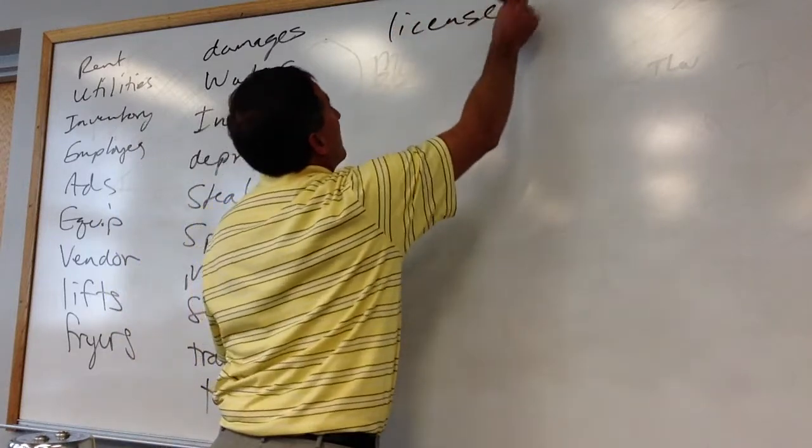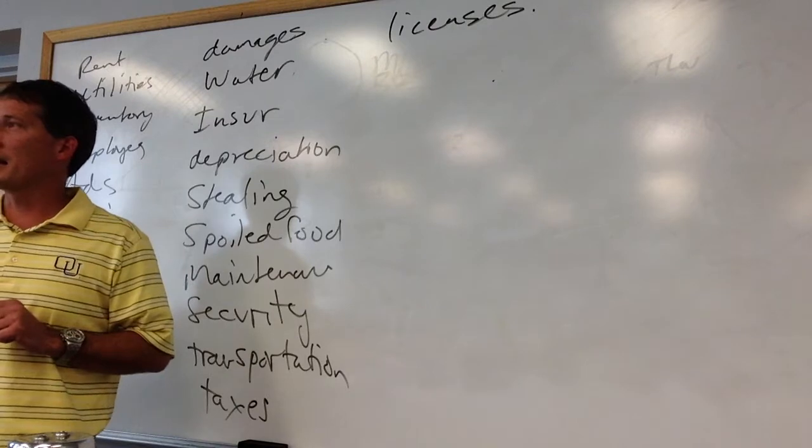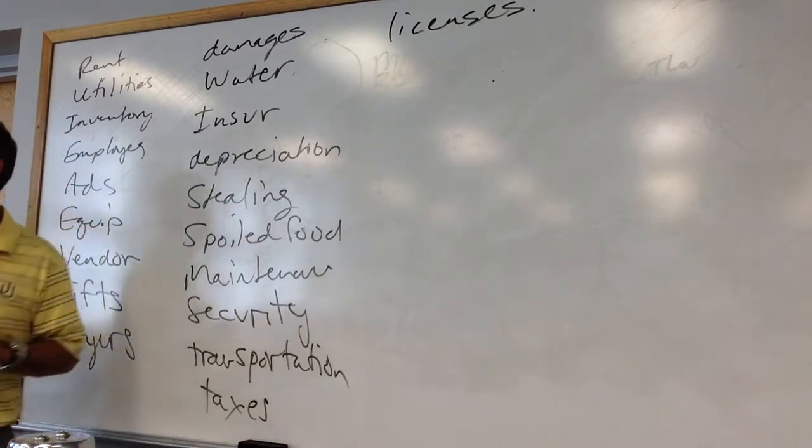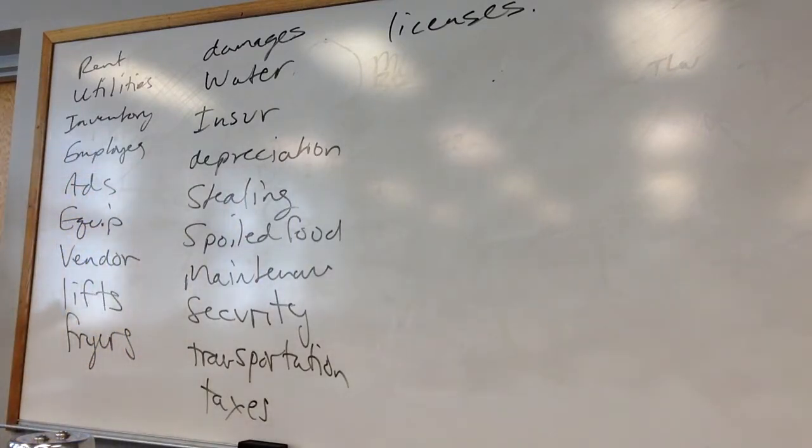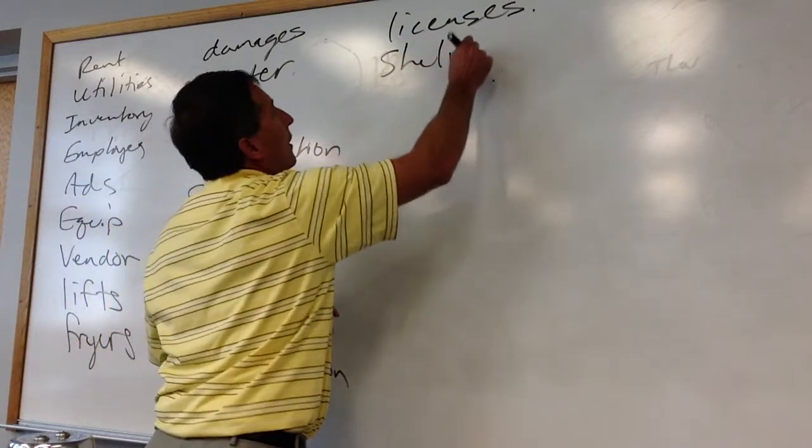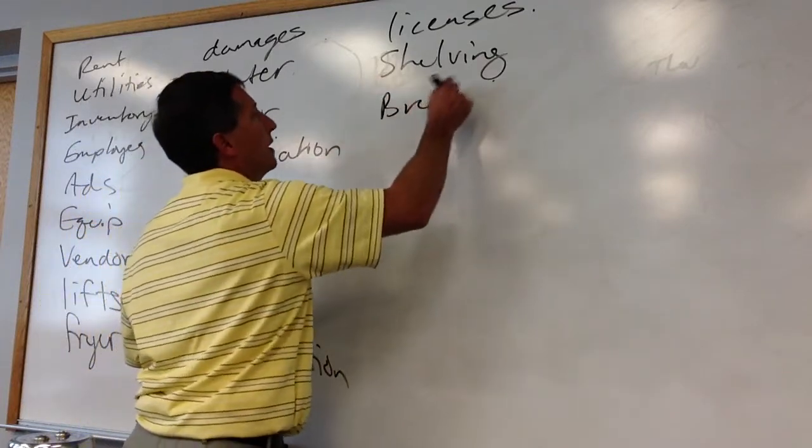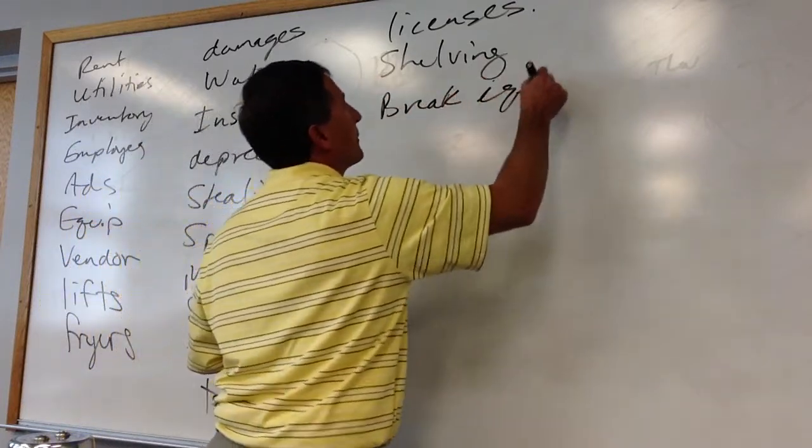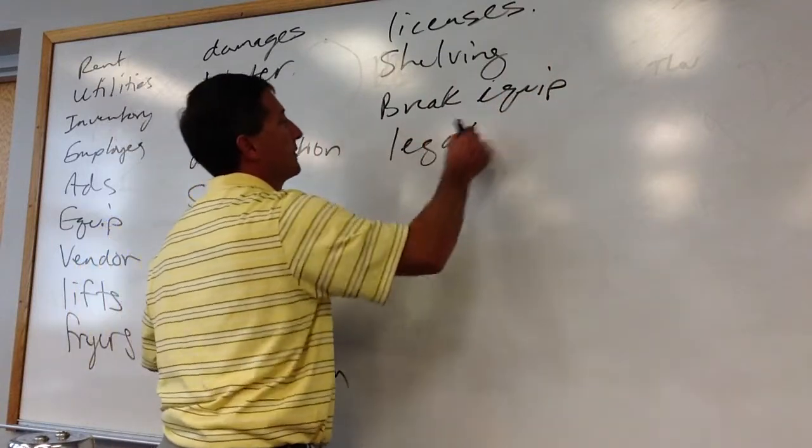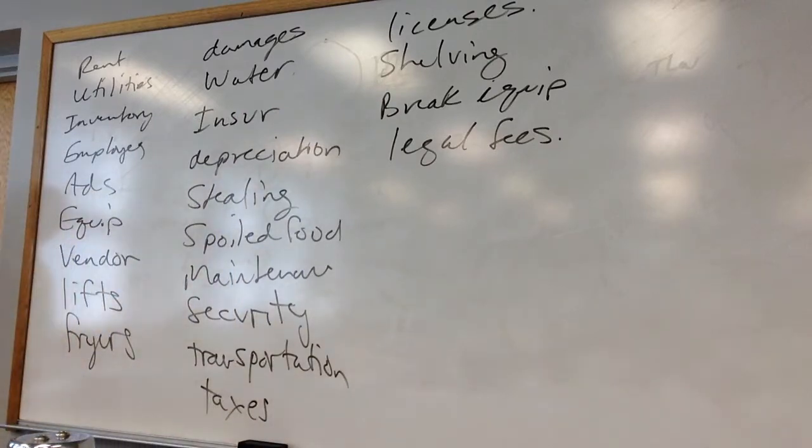Are we burning out? Anything else back there? What did you guys come up with? Other things to add to this? General infrastructure, like their shelving, and everything. Okay. Shelving. Unexpected breakage on equipment. Breakage. Maintenance. Break. Equipment. You mentioned stealing, so maybe some legal fees. Attorney fees. That sort of thing. All right. That's good enough.